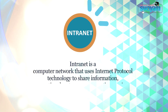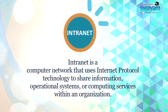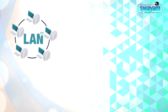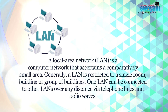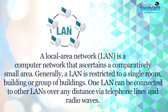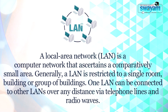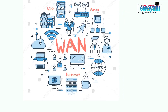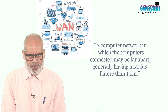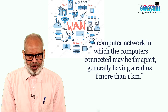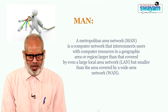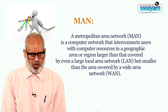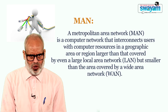An intranet is a computer network that uses internet protocol technology to share information, operational systems or computing services within an organization. A local area network (LAN) is a computer network that covers a comparatively small area, generally restricted to a single room, building or group of buildings; one LAN can be connected to other LANs over any distance via telephone lines and radio waves. A wide area network (WAN) connects computers that may be far apart, generally having a radius of more than one kilometer. A metropolitan area network (MAN) interconnects users with computer resources in a geographic area larger than a LAN but smaller than a WAN.